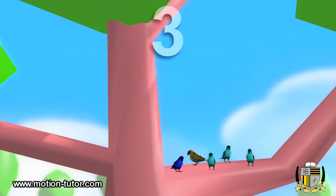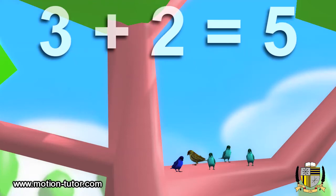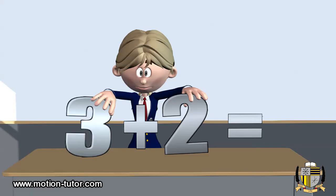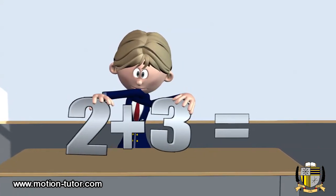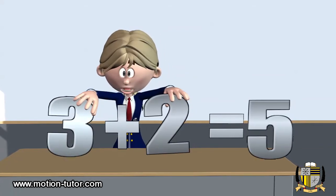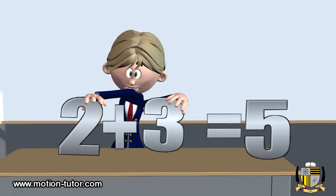So in this example, we have three plus two is equal to five. And over here, we have two plus three is equal to five. So that means, although I switched the order, we still got the same answer.